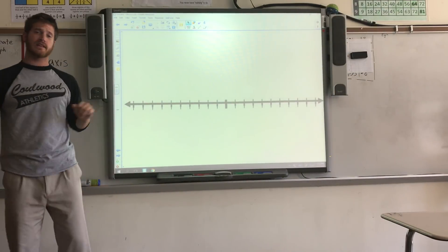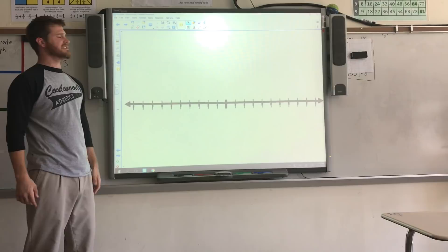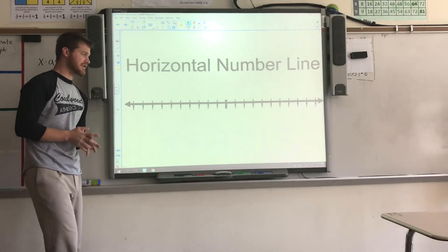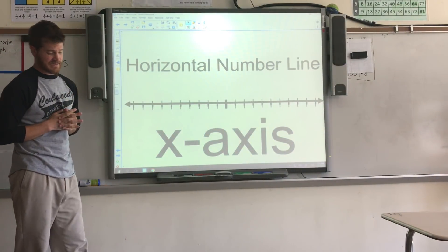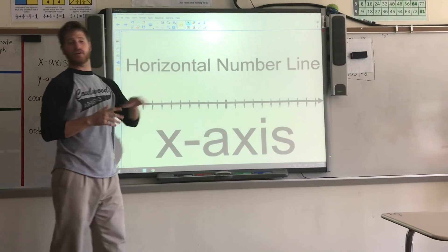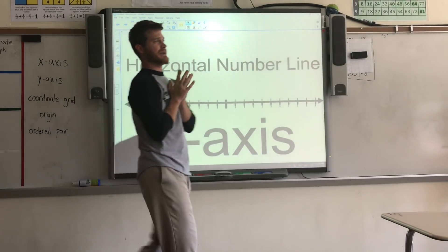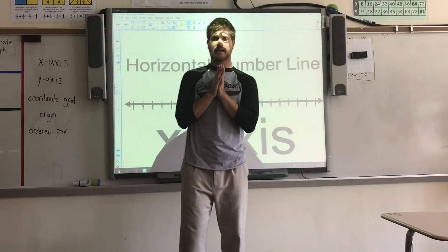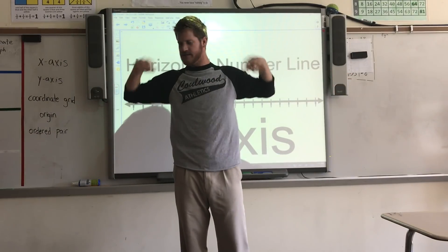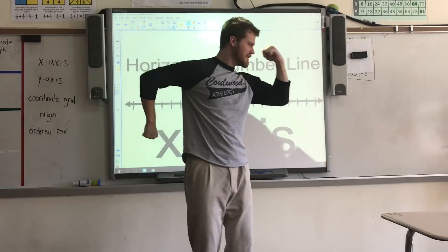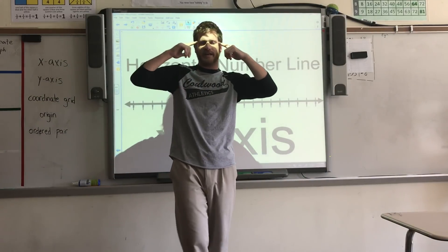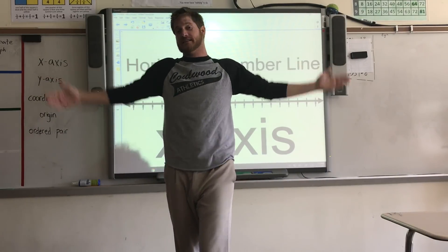Starting with a straight line going across — it's called a horizontal number line, also known as the x-axis. A way to remember that the one that goes straight across is the x: you can say 'show me the x before you flex.' Another one: when you're perplexed, you show the x.